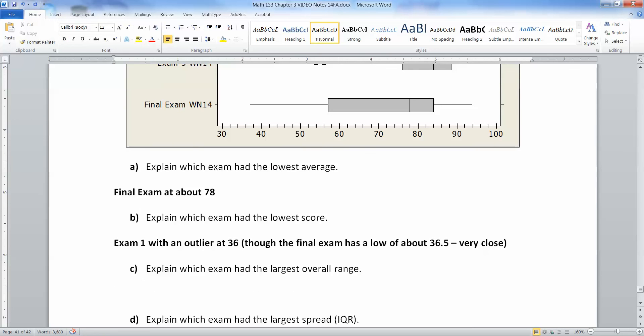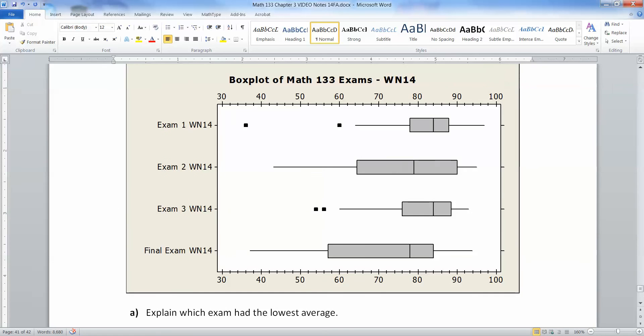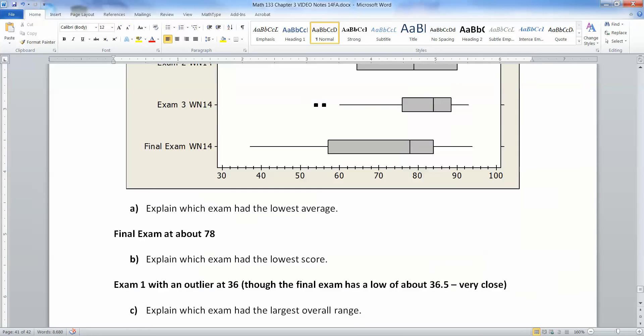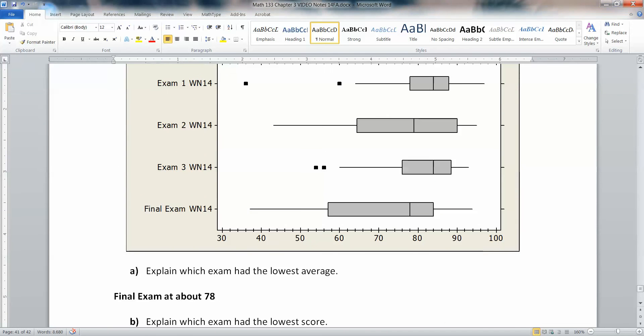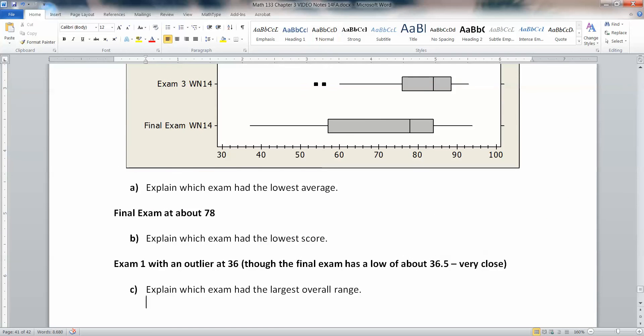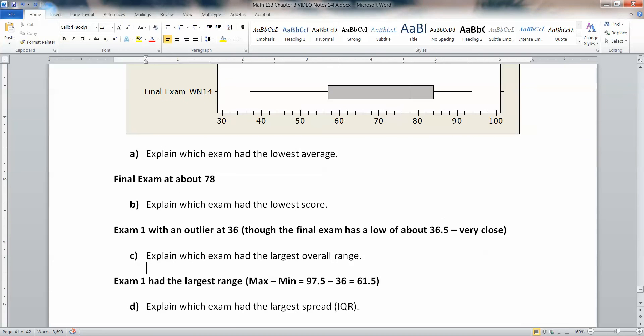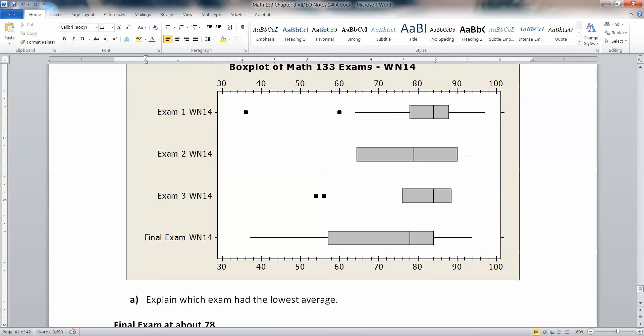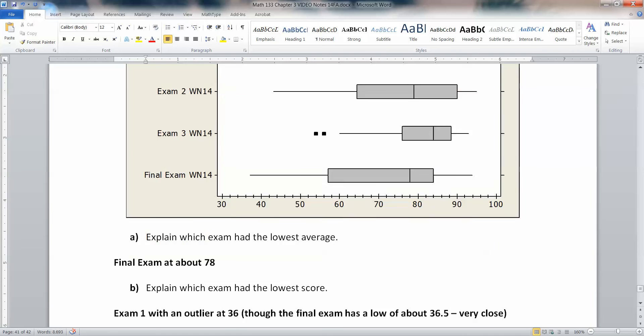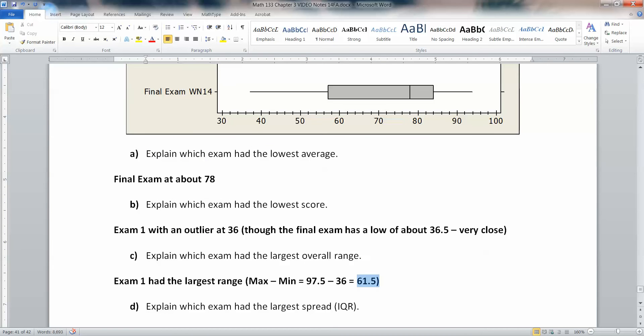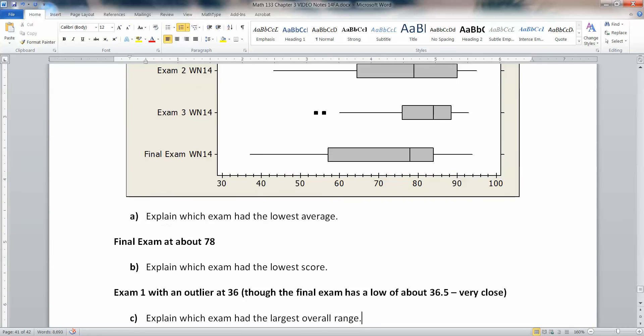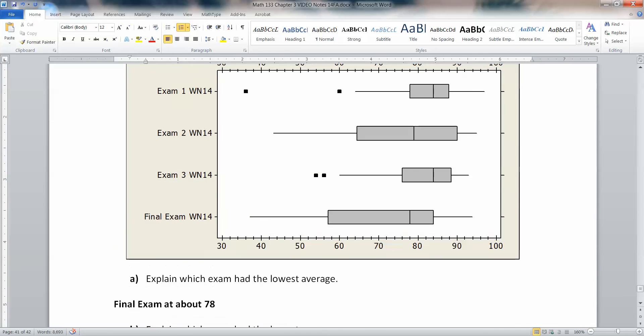Which exam had the largest overall range? The range is the distance between the lowest and the highest. That is definitely exam one. Look at it. Because the highest is way over here at 98.5, and the lowest is at 36. So that's the spread between the lowest value and the highest value. So let me type that up. The max was about 97 and a half or so, and the min was 36. 97 and a half take away 36 is 61.5. Quite a spread. The final exam is pretty big too, but the high on the final was only 94. So that's not quite a spread out.